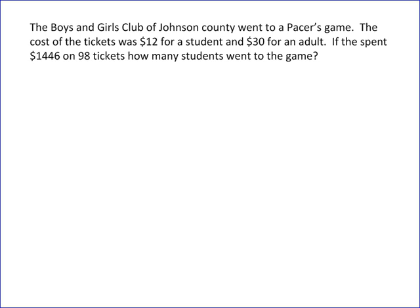In this problem, a group of people are going to a Pacer game. Student tickets cost a different value than adult tickets — students are $12 and adults get in for $30. They also tell you the total amount spent and the total number of people going, and it asks you to find out how many students are in the game.